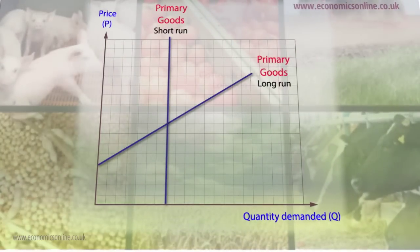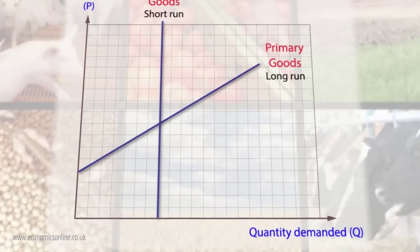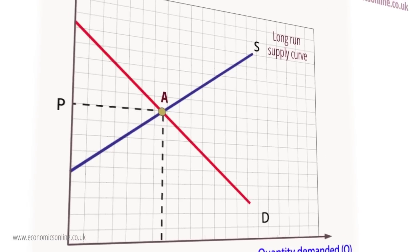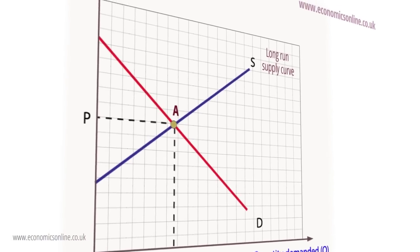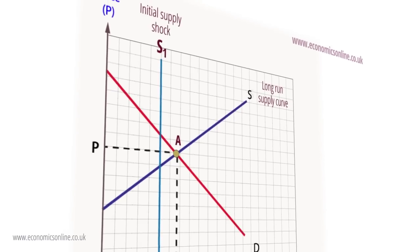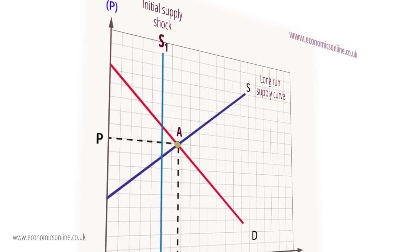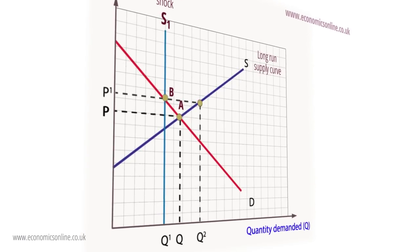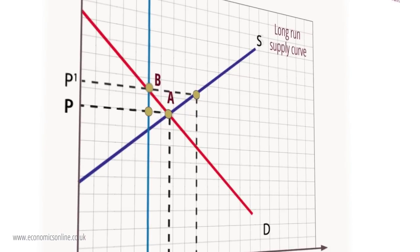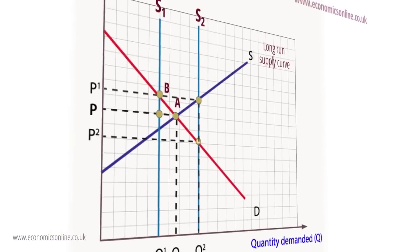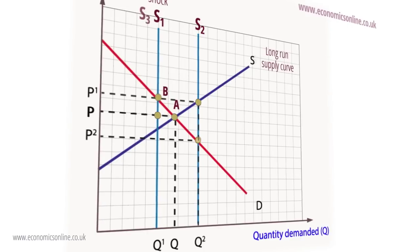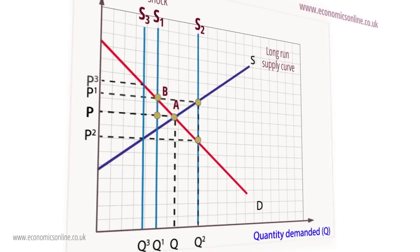The cobweb model shows how elasticity of supply creates the potential for volatile prices. If the market starts with a stable equilibrium at A, a short-run shock can push the short-run supply curve to S1. Equilibrium price is pushed up to P1, with a new equilibrium at B. The higher price encourages farmers to plan to produce more next year at Q2, with short-run supply curve at S2. However, this drives the price down to P2, which in turn discourages production next year. The effect is that the price is driven up to P3, and prices become increasingly volatile.